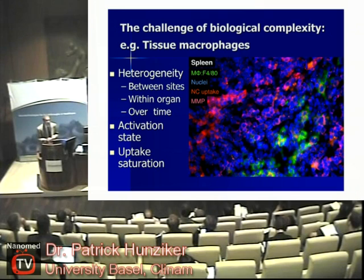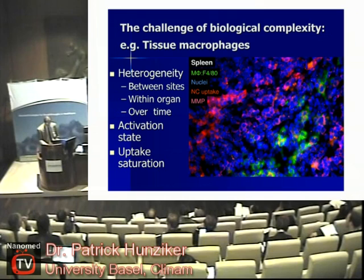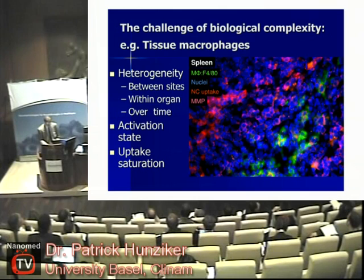For example, here is a visualization of macrophages in the spleen. We have red nanocarriers, which are taken up by macrophages in the spleen. We have green classical macrophage stain, which stains the cells in a different area of the spleen. And we have metalloproteinases, which are colored red, which still stain in another area.